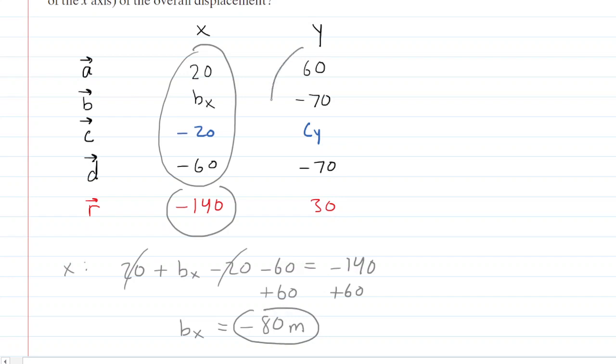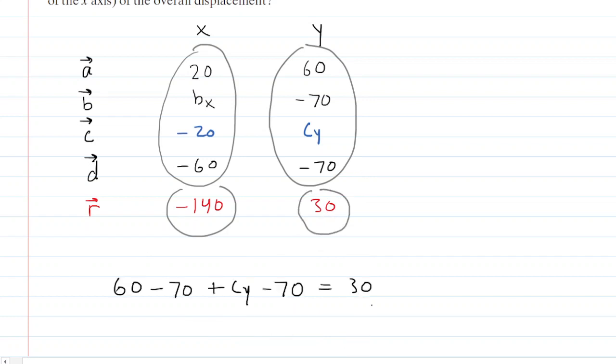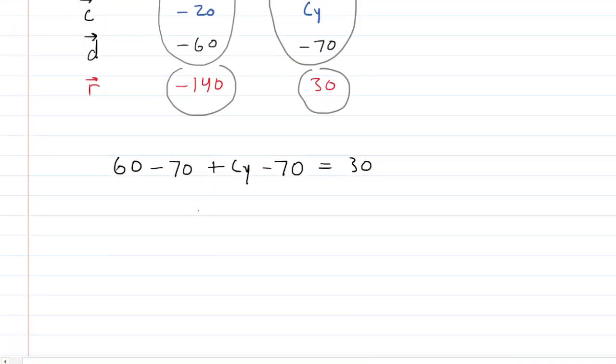Now we're going to set up a similar looking equation for the y components. We're going to add those four y components together and then set that equal to 30. We can solve this equation for c sub y. We have 60 minus 70, negative 10, and then minus 70 is negative 80. So you have c sub y minus 80 is equal to 30.